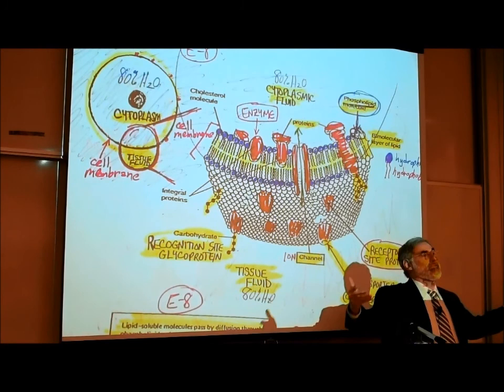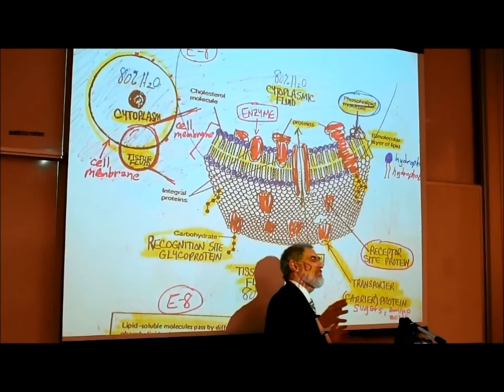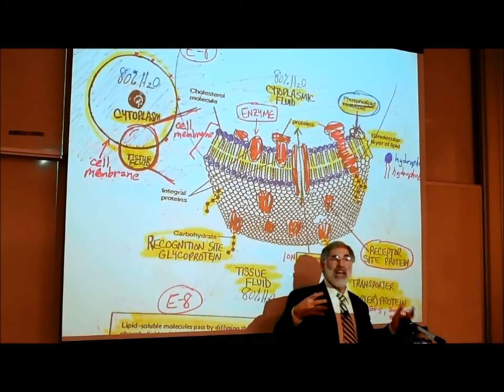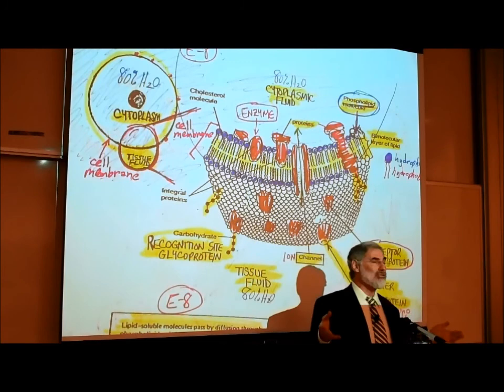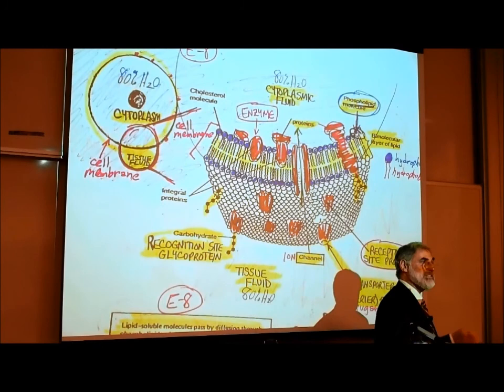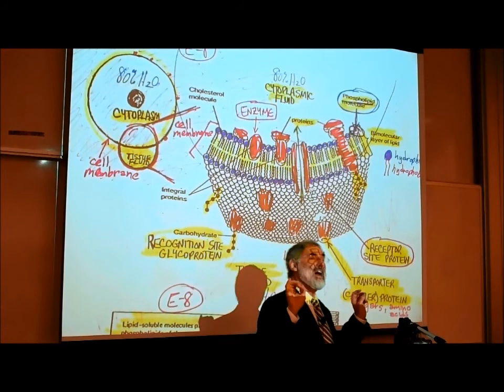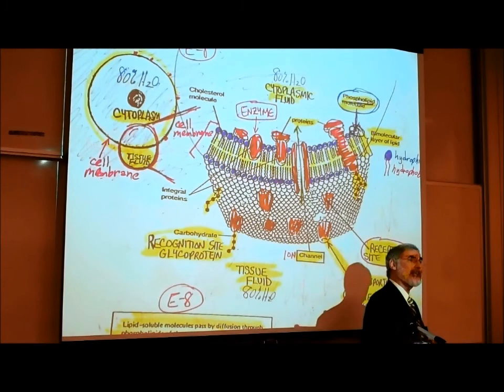Now we understand how some hormones affect certain cells but not others. For example, estrogen affects a woman's uterus and breasts, but estrogen doesn't affect the heart. Why not? The cells of the uterus have estrogen receptor sites on their outer surface, but heart cells do not — therefore, estrogen has no effect on heart cells.